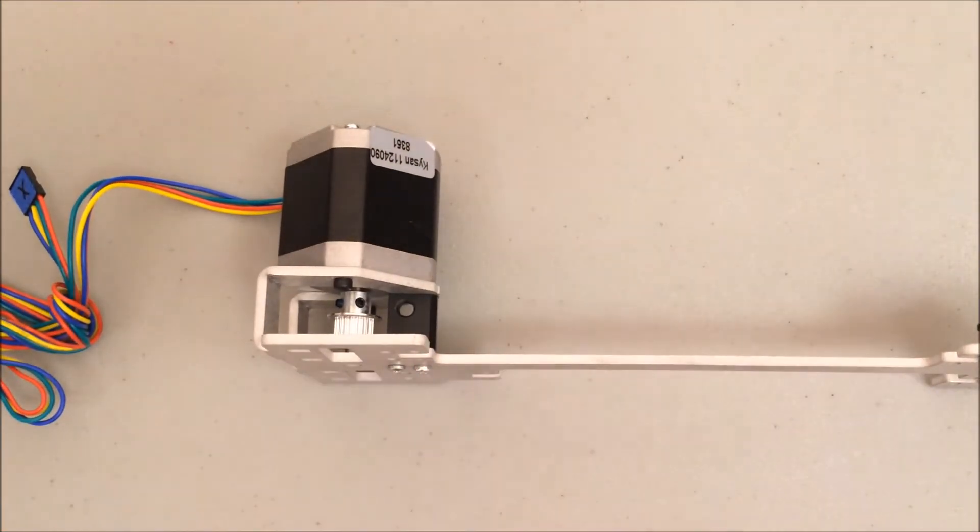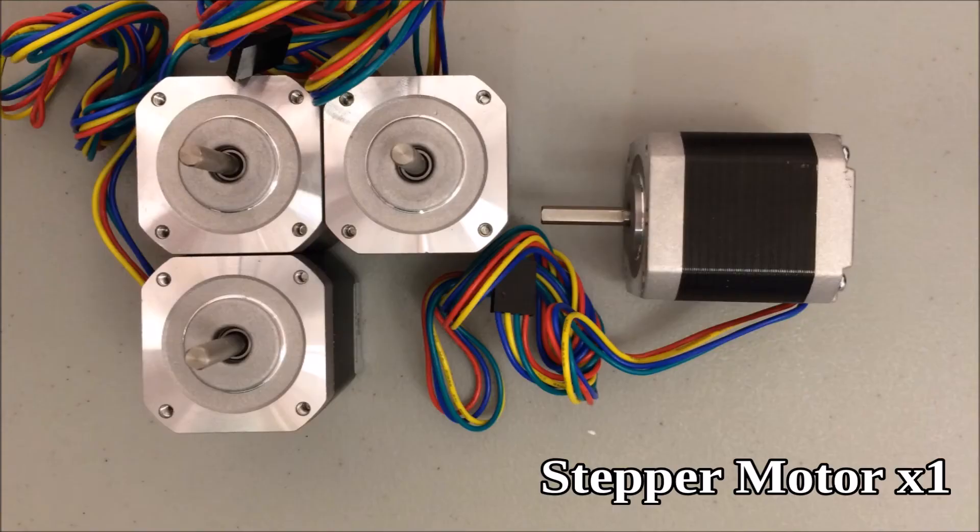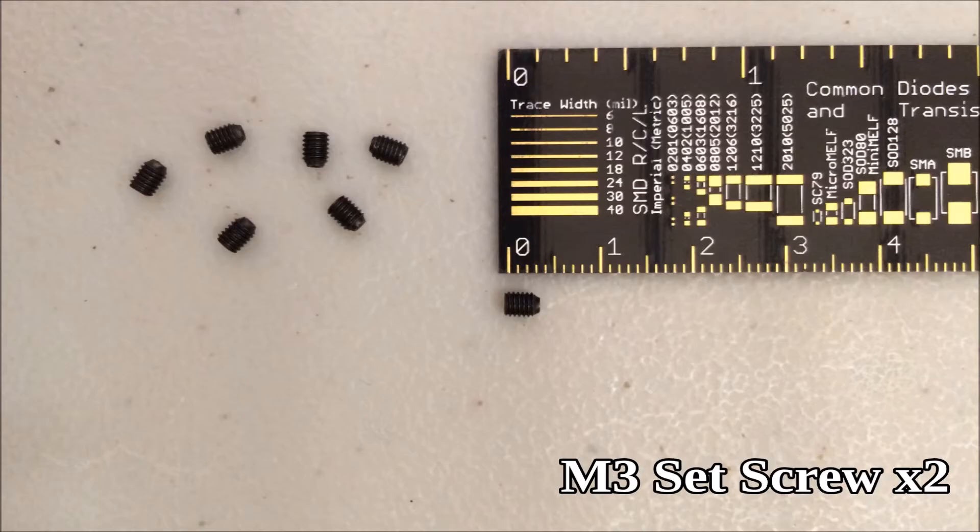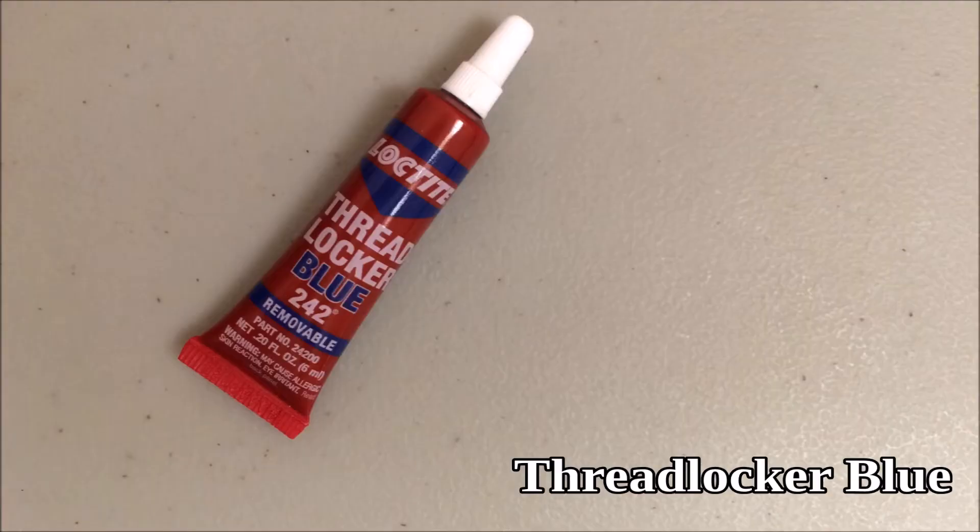There's a lot of steps involved to this. You need one stepper motor, one GT2 pulley, two M3 set screws, thread locker blue.